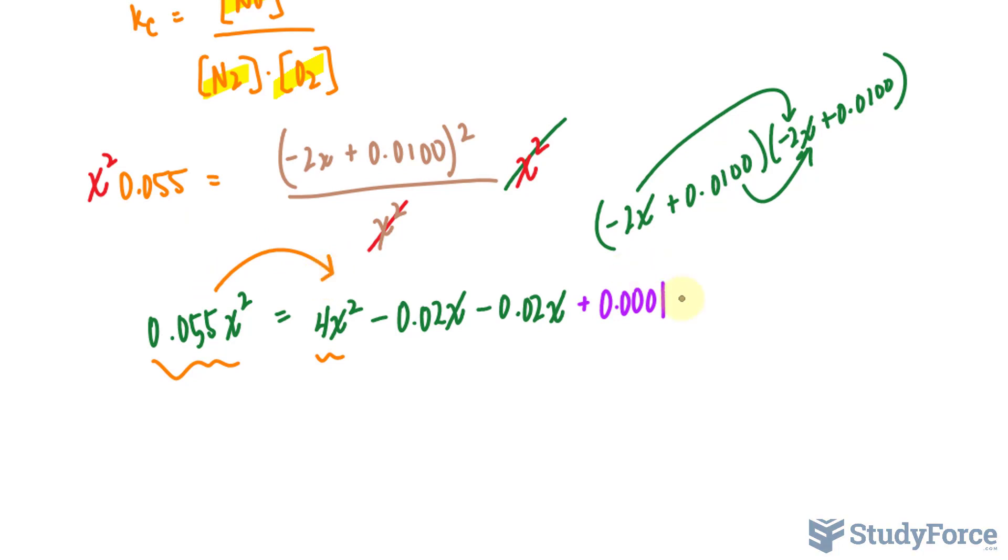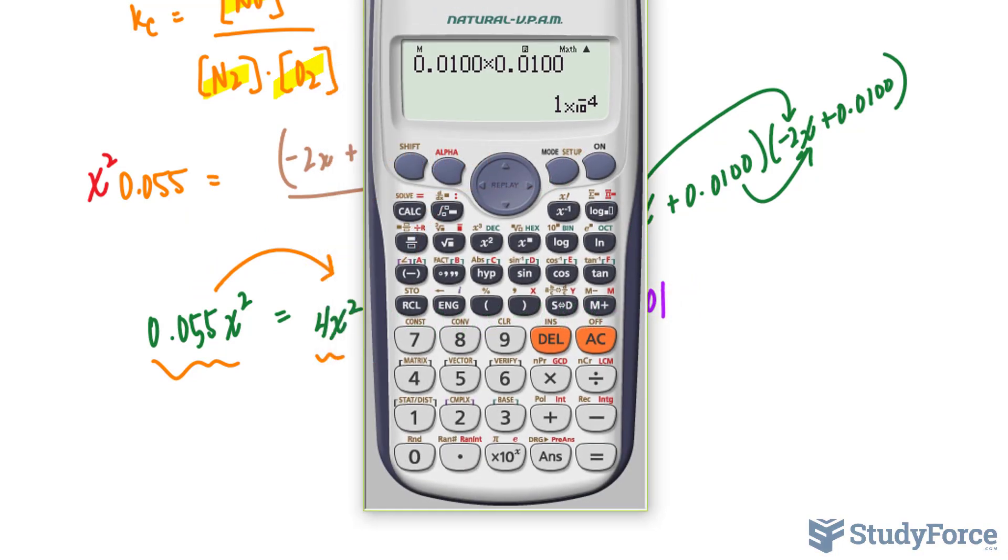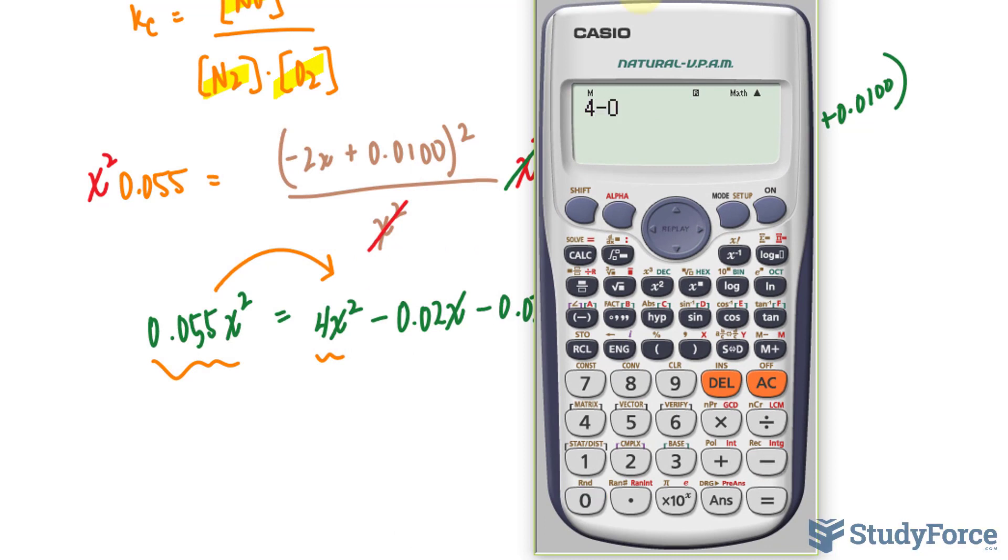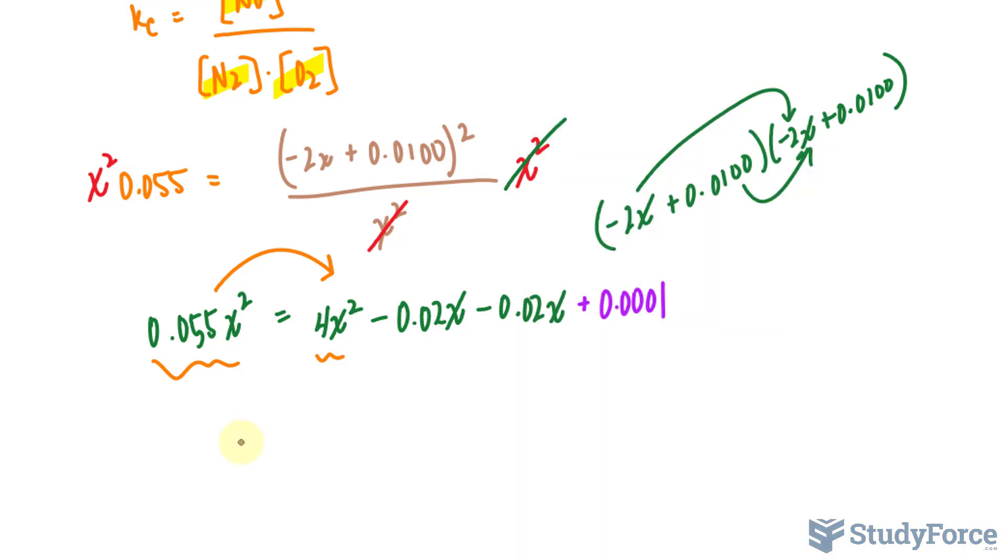I'll bring this over, making it negative 0.055. That being said, 4 minus negative 0.55 is equal to 3.945. So 0 is equal to 3.945X squared. Combining these, I end up with negative 0.04X plus 0.0001. This is a quadratic equation in general form. We'll represent this as A. We'll represent the coefficient here as B. And this number, the constant, as C.